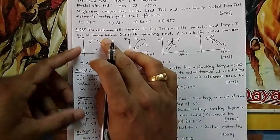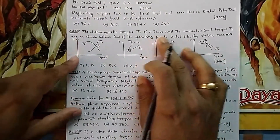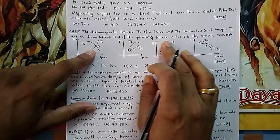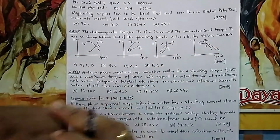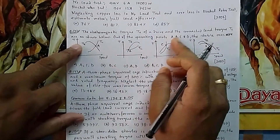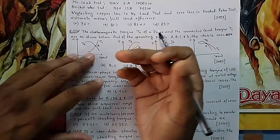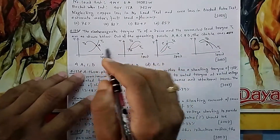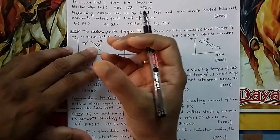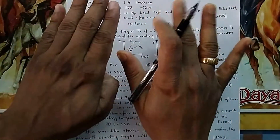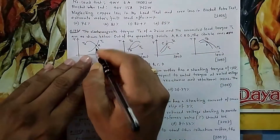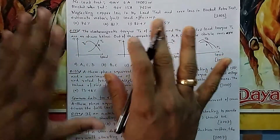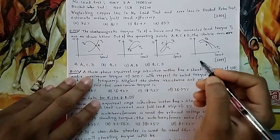Question 172: The electromagnetic torque Te of a drive and its connected load torque TL are shown. Out of the operating points A, B, C, D, we need to find which are stable. At any operating point, the motor torque equals the load torque. The question is which of these operating points are stable.